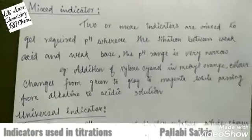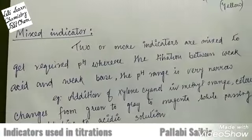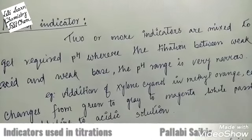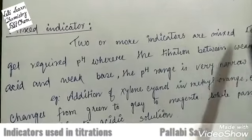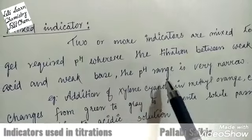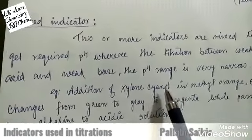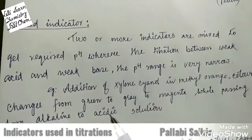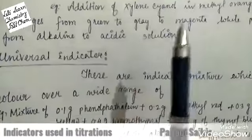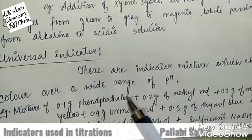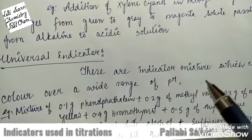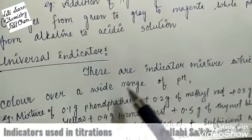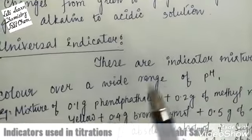There are two examples of mixed indicator and universal indicator. In titration of weak acid and weak base the pH range is very narrow, so two or more indicators are mixed to get the required pH range where the titration is possible. For example, addition of xylene cyanol in methyl orange causes the color to change from green to magenta while passing from alkaline to acidic solution. A universal indicator is used for a wide range of pH for the titration of acid and base.